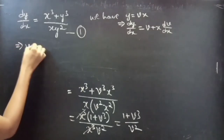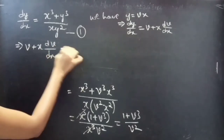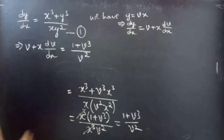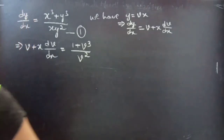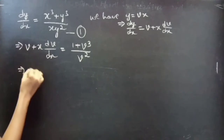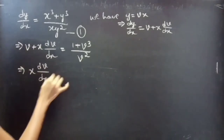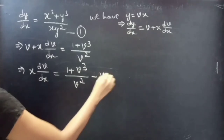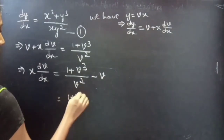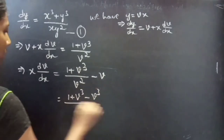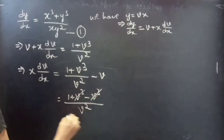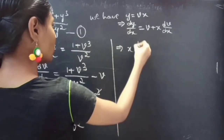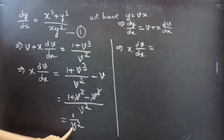This implies v + x · dv/dx = (1 + v³) / v². Taking v to the right-hand side: x · dv/dx = (1 + v³) / v² − v = (1 + v³ − v³) / v² = 1/v². So x · dv/dx = 1/v².